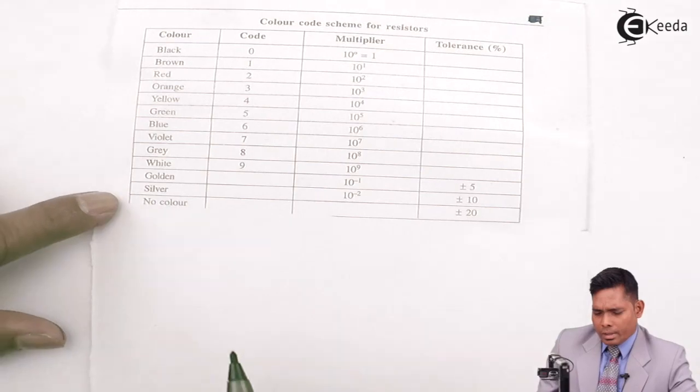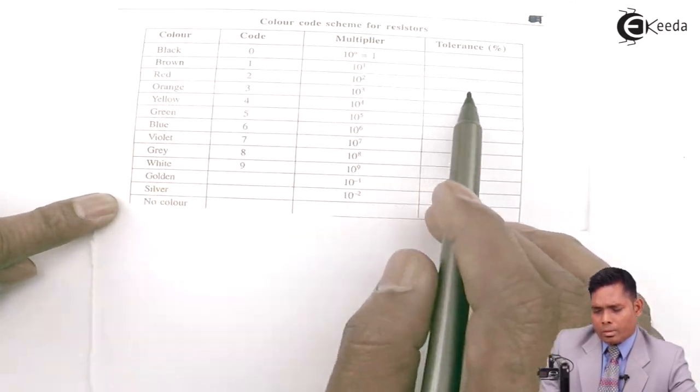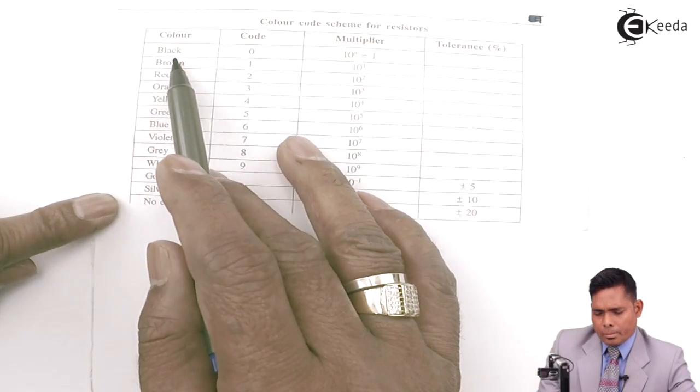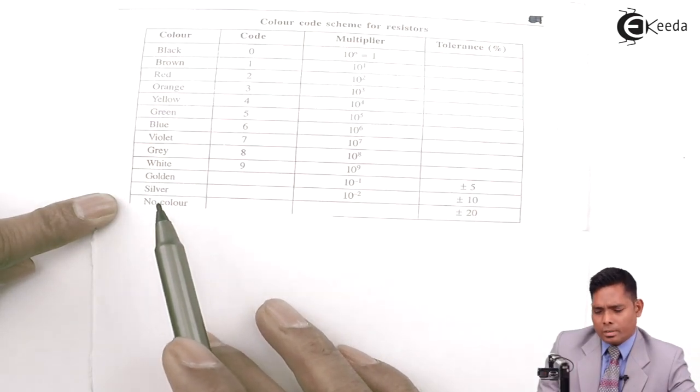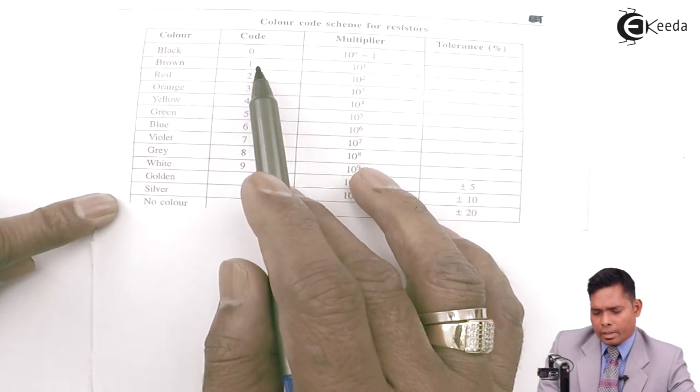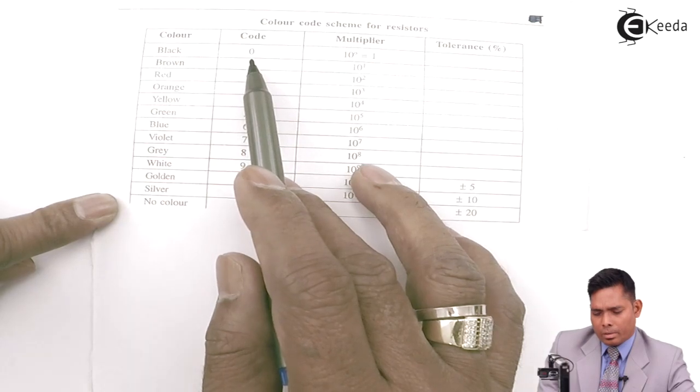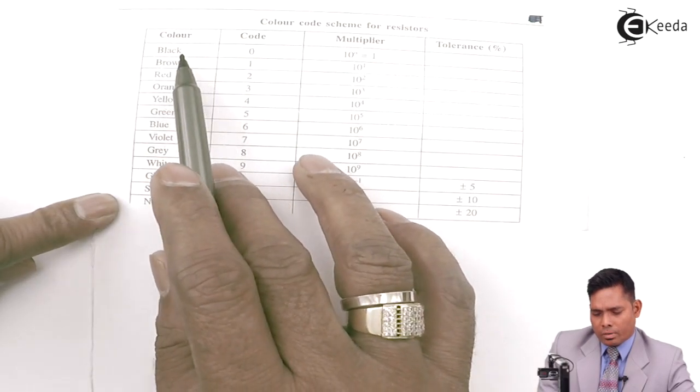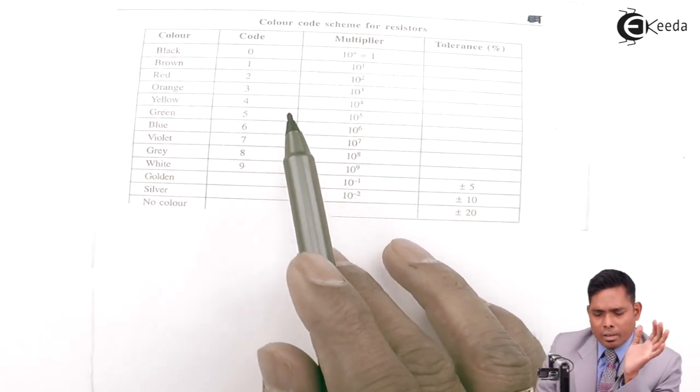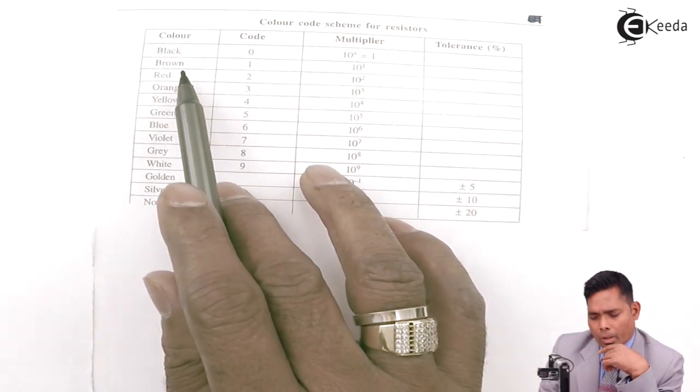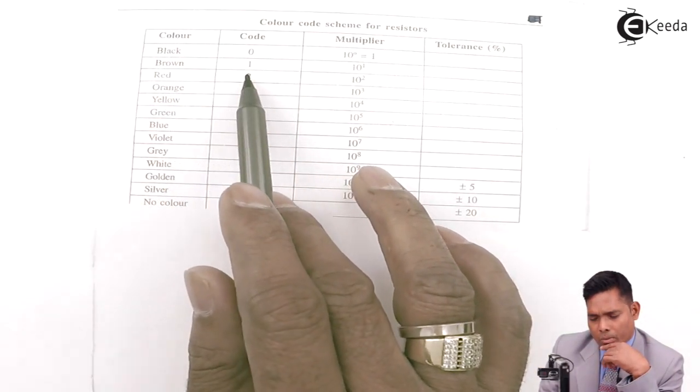As seen here, there are four columns. The first column represents the colors, name of the different colors, and the second column here are numbers. That means 0 stands for black. When you find a black color, that means the number is 0. Brown stands for 1, red stands for 2, and so on.